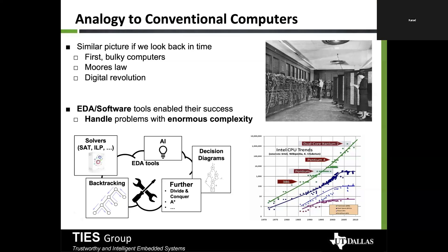If you imagine for a moment these EDA companies — Synopsys, Mentor, Cadence, and Ansys — all going away, then it would be impossible for Intels, AMDs, and NVIDIAs to build the classical hardware we have today. Apple would not be able to make your new iPhone. A big role in the CPU trends we're seeing is played by EDA tools, so we definitely need them for developing state-of-the-art hardware.